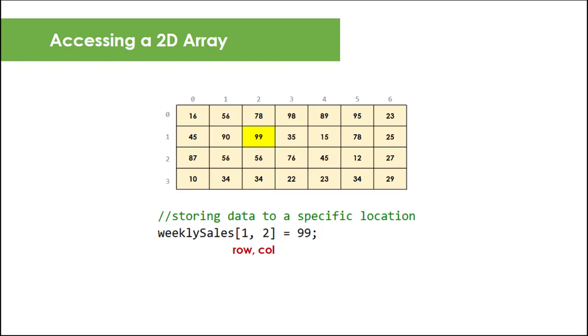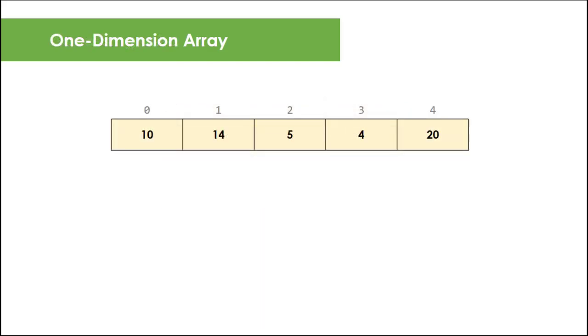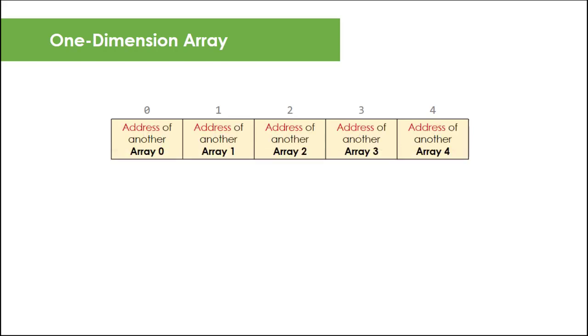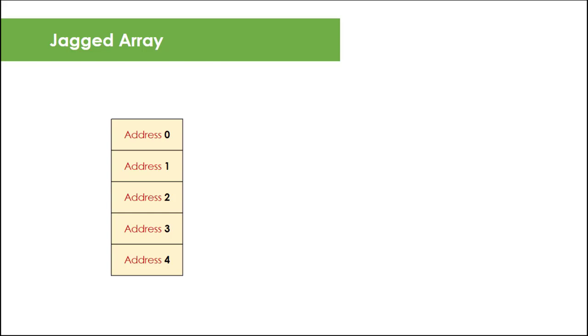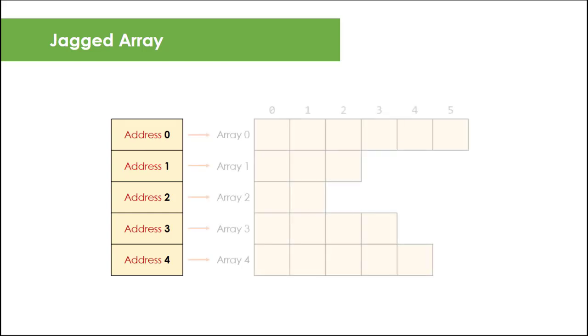Meaning that for each cell, instead of storing actual data item, it stores only the address of another array that holds the actual data items, similar to a pointer in C language if you will. Thus making an illusion of you working with a rectangular array but with different number of columns. The truth is you are really working with different arrays for each row.